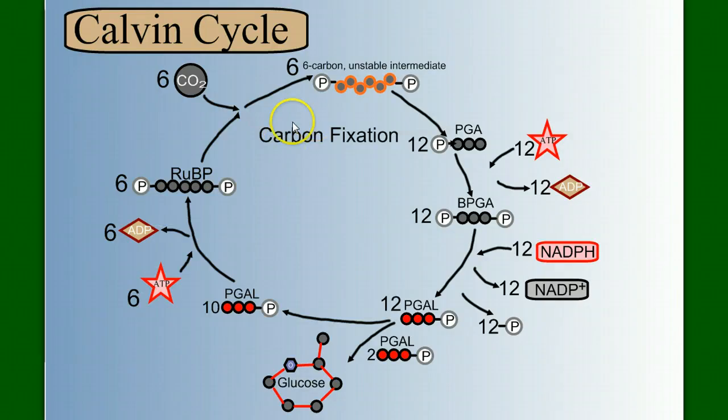This type of carbon fixation, where carbon is picked up by RuBP and fixed into a molecule of PGA, a three carbon molecule, these plants that do this are called C3 plants because the first stable intermediate has three carbons.